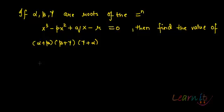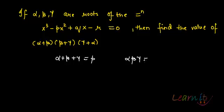As we have learned in the previous video, we shall be able to figure it out from within this equation itself. What do we know about this equation and roots? I know that alpha plus beta plus gamma equals p, alpha times beta times gamma equals r, and alpha beta plus beta gamma plus gamma alpha equals q.